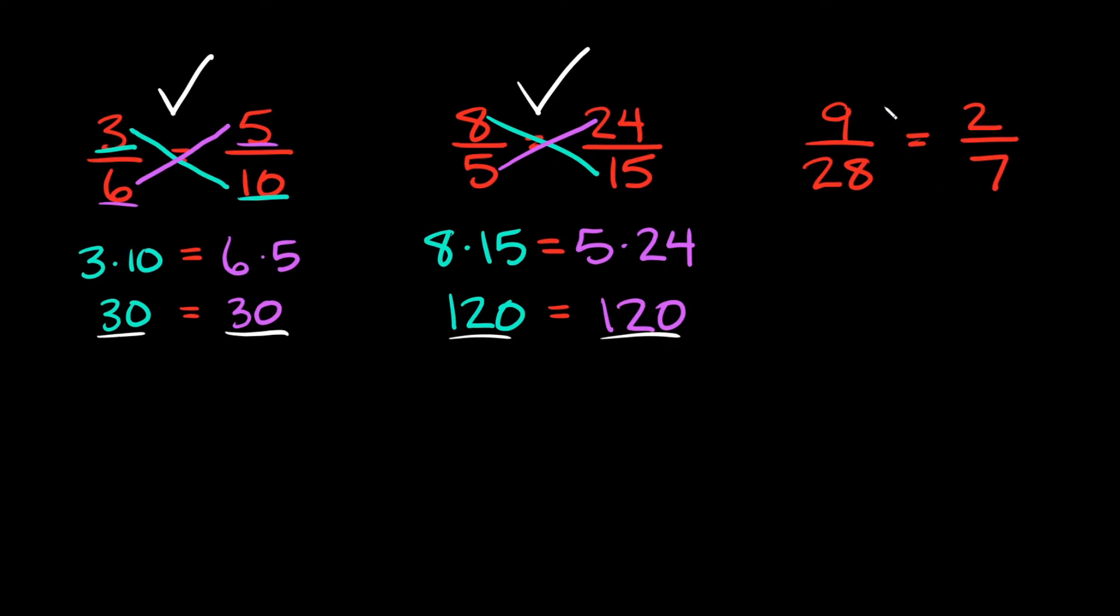And last one for good measure. Here we have 9 over 28 is equal to 2 over 7. So again to cross-multiply you can just draw your cross to kind of guide you there. So I'm going to do 9 times 7 and that's going to be equal to 28 times 2.